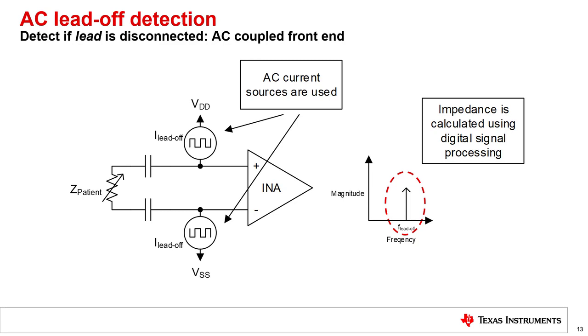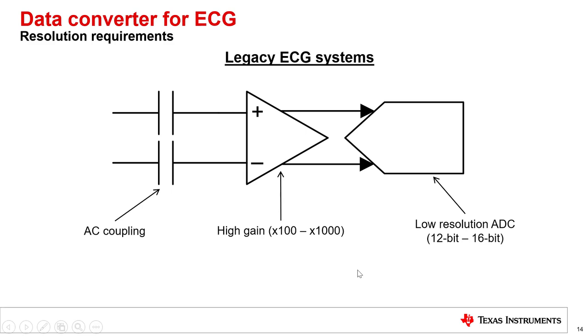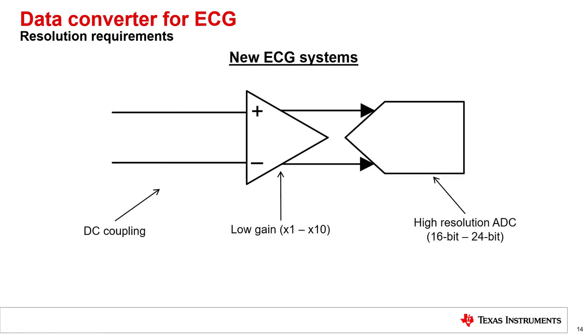The final stage in the ECG input signal chain is the analog to digital converter or ADC. Past ECG systems typically use cheaper low resolution ADCs. In order to get the input referred noise of the system low enough, the INA stage would need to be configured for a very large gain. This would not be able to tolerate the large offset voltage from the electrodes, so they would also need to AC couple the inputs in order to use large gains without clipping the ADC. New ECG systems take advantage of high resolution ADCs. They can afford to DC couple the inputs to the INA, use a low gain, and take advantage of the wide dynamic range of the ADC to measure a small ECG signal on top of the large DC offset.